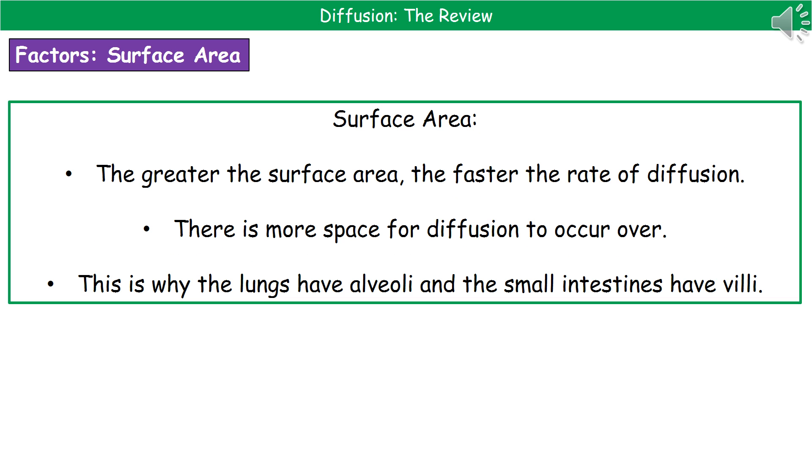Our third and final factor that can affect the rate of diffusion is the surface area. Now, what we find as our pattern here is that the greater the surface area, the faster the rate of diffusion will be. And the whole reason behind that is that if you've got a bigger surface area, then we've actually got more space for diffusion to occur across. So if we think about examples in the body